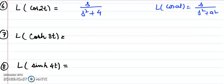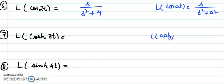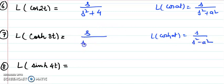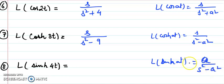For the hyperbolic cosine, the formula uses s² minus a², so L{cosh(at)} = s/(s² − a²). The Laplace transformation of cosh(3t) is s/(s² − 9). For hyperbolic sine, L{sinh(at)} = a/(s² − a²). With a = 4, the Laplace transformation of sinh(4t) is 4/(s² − 16). In summary: trigonometric functions use s² + a², while hyperbolic functions use s² − a².